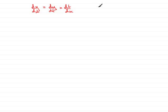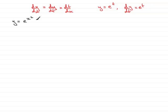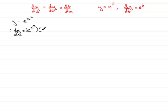Suppose we had y equals e to the t. You should know that differentiating this gives dy by dt equal to e to the t. Now suppose I had y equals e to the x squared. To differentiate this I need the chain rule — I call x squared t, so I have y equals e to the t. Differentiating, dy by dt is e to the t, or e to the x squared. Then I multiply by the differential of t with respect to x: differentiating x squared gives 2x. Cleaning that up, I get 2x e to the x squared.